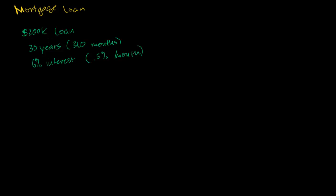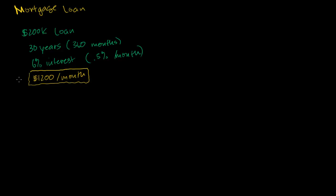Normally when you get a loan like this, your mortgage broker or banker will look into some chart or type the numbers into a computer program and say your payment is going to be $1,200 per month. If you pay that $1,200 per month over 360 months, at the end you will have paid off the $200,000 plus any accrued interest. But this number isn't that easy to arrive at — let's show how the actual mortgage works.